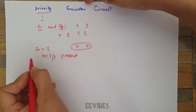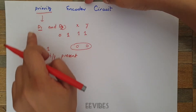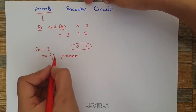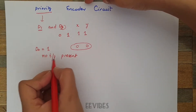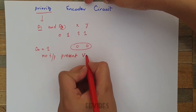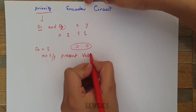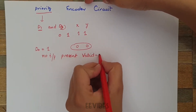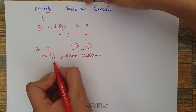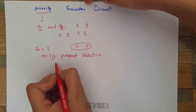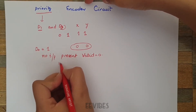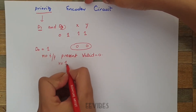Both problems are handled in the priority encoder circuit. When no input is present, the valid input indicator V should be equal to 0. Whenever any input line is active, V should be equal to 1.